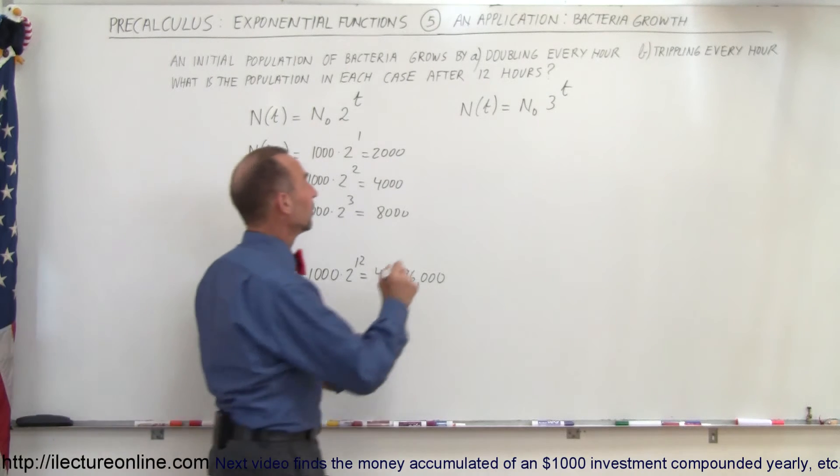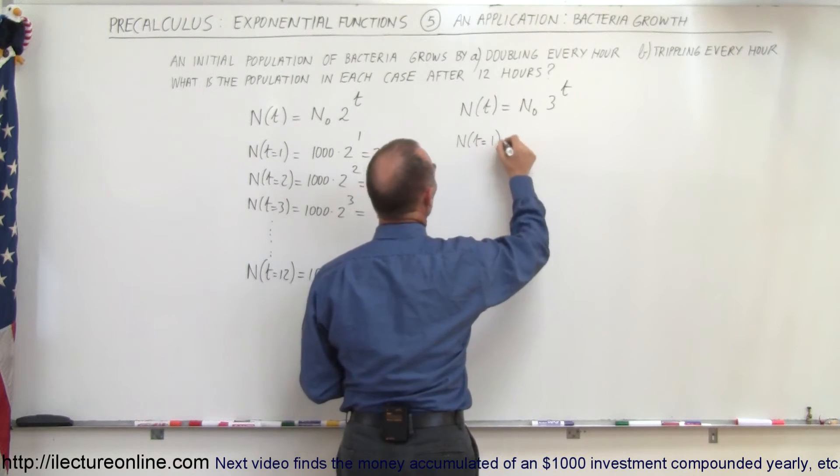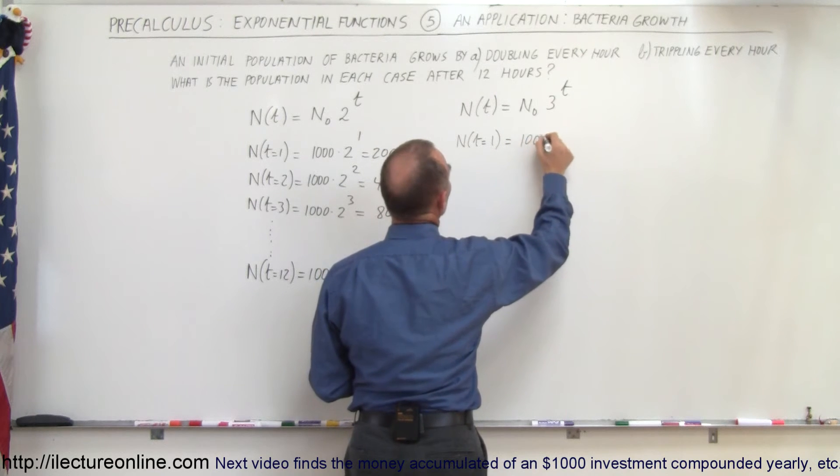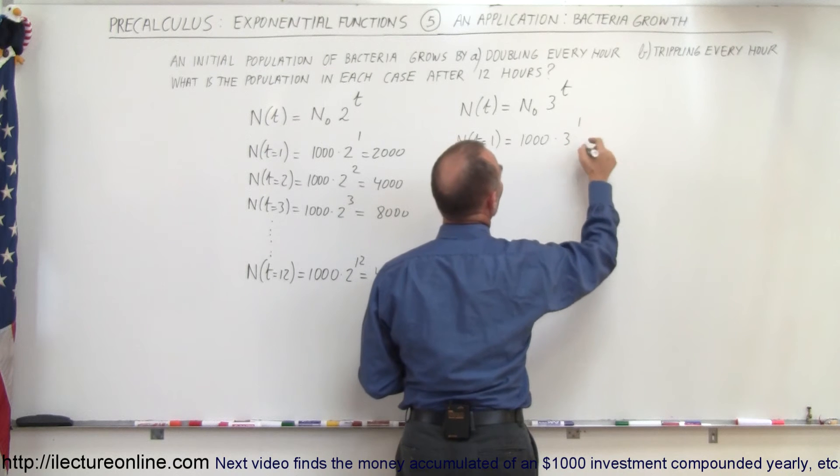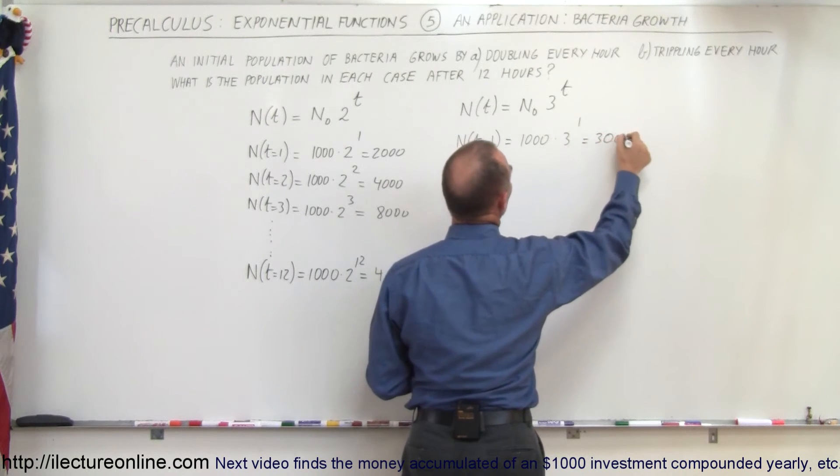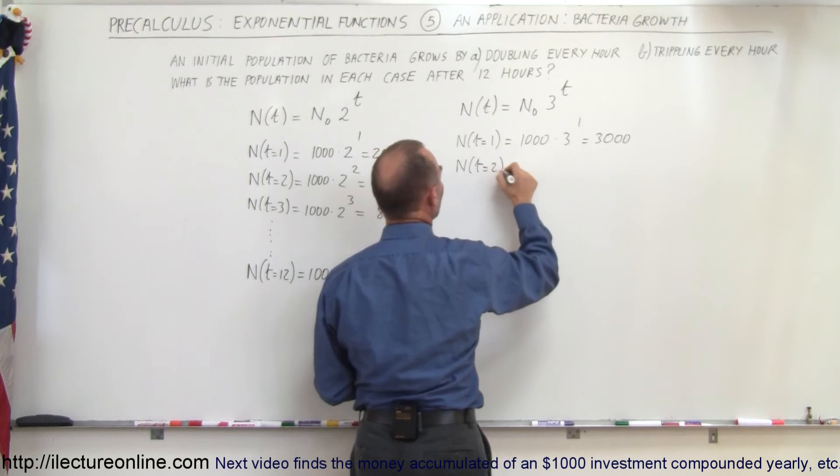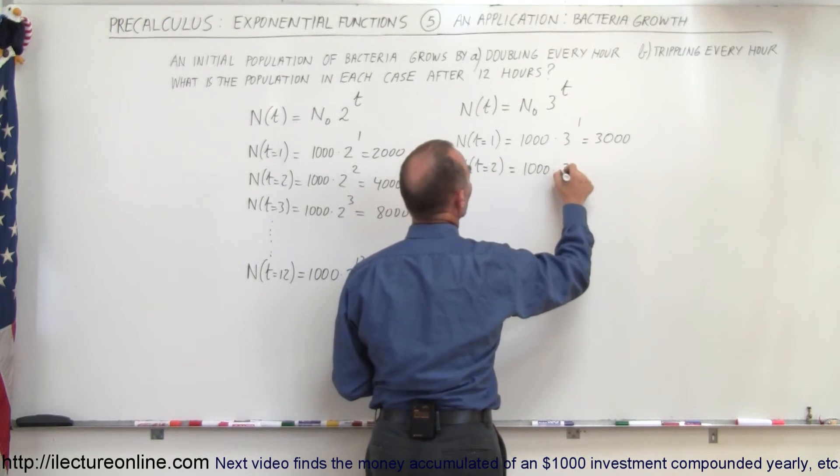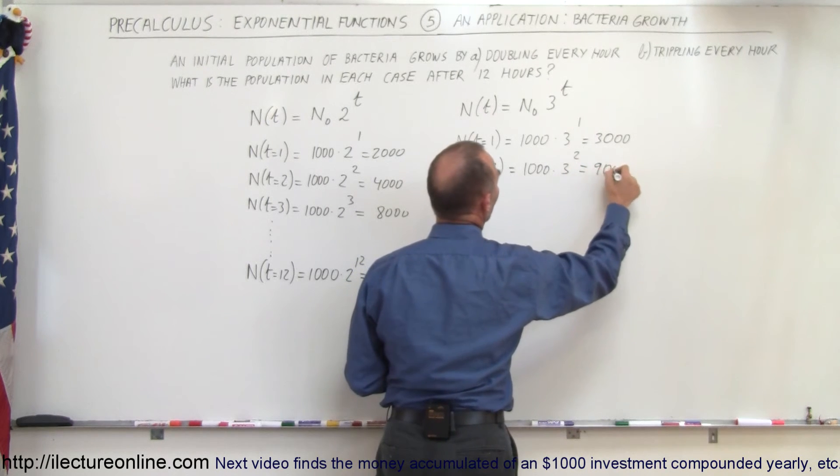What about when it triples every hour? N(1) equals 1000, the initial population, times 3 raised to the first power. That's 3000. N(2), after two hours, is 1000 times 3 raised to the second power. That's 9 times 1000, or 9000.